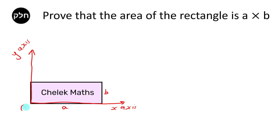Down here we have our origin, (0, 0). This point is A long, so that's going to be A on the x-axis but still 0 on the y-axis. This next point is B high, so that's going to be still 0 on the x-axis but B on the y-axis. So this point is going to be (A, B).